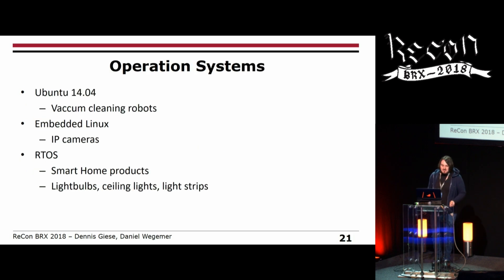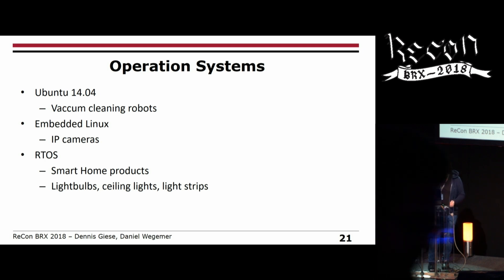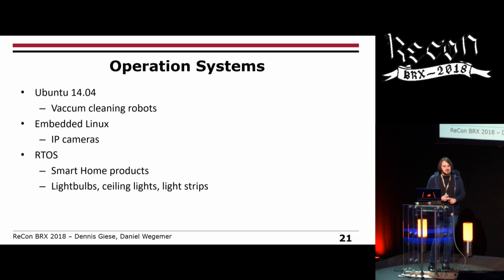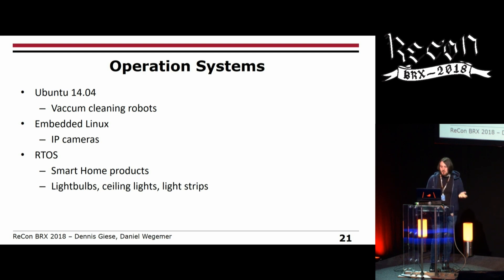Operating system-wise: sometimes they use a complete OS like Ubuntu — this is the case for the vacuum cleaning robots. Sometimes they use embedded Linux — for IP cameras or routers. And for small devices like light bulbs and smart home gateways, they use RTOS.